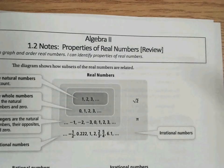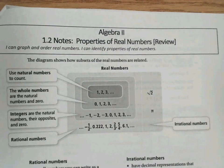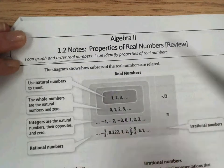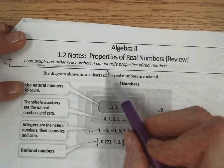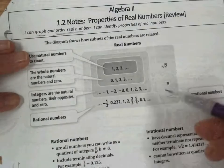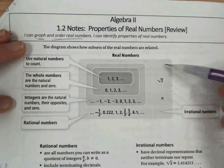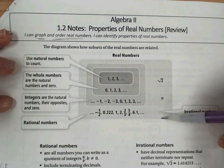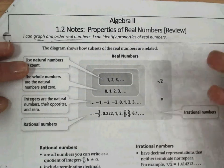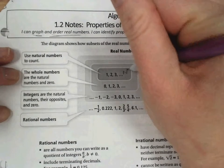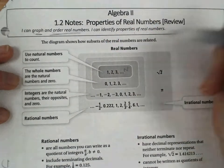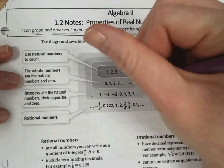On the next side here, we're talking about section 1.2. So we've just transitioned sections. And we have a goal here to be able to graph and order real numbers. And so also to be able to identify properties of real numbers. So two different goals. First, you've probably seen this figure before this Venn diagram, which helps us to consider all of the different groups of numbers. First, we have the natural numbers. And those are counting numbers. Those are the first numbers you talk about in kindergarten. And then we use an n to represent natural numbers.